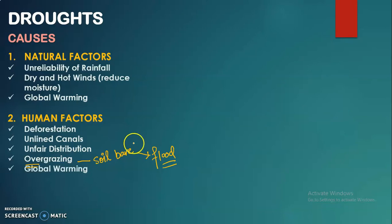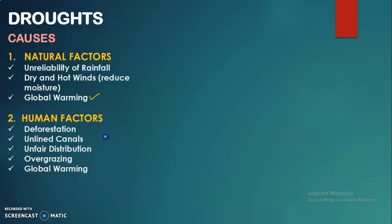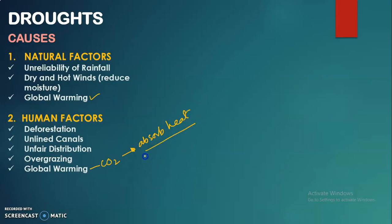Global warming is also a human factor. While we discussed its natural effects on evapotranspiration earlier, humans also contribute to global warming — for example by generating carbon dioxide. Carbon dioxide absorbs heat and increases atmospheric temperature, which eventually affects conditions and leads towards lower rainfall.